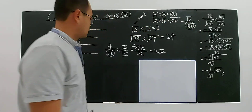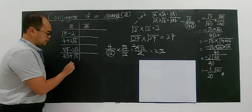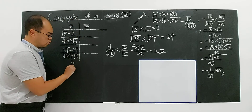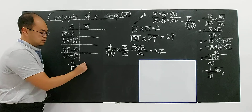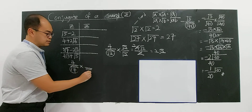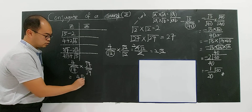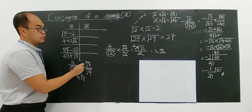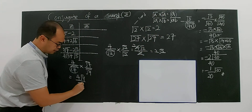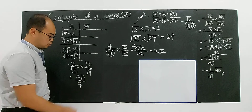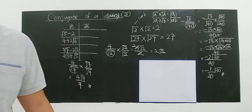Same approach: if you have 4 over square root of 7, you multiply by square root of 7 over square root of 7. You get 4 square root of 7 on top, and square root of 7 times square root of 7 gives you 7 on the bottom — now a rational number. This is how you deal with a single surd in the denominator.